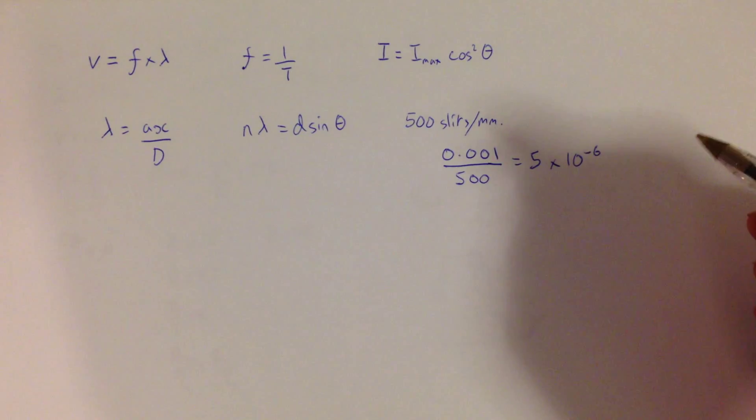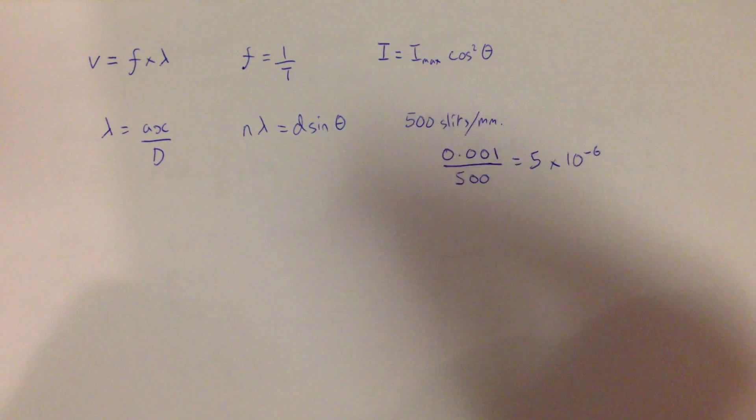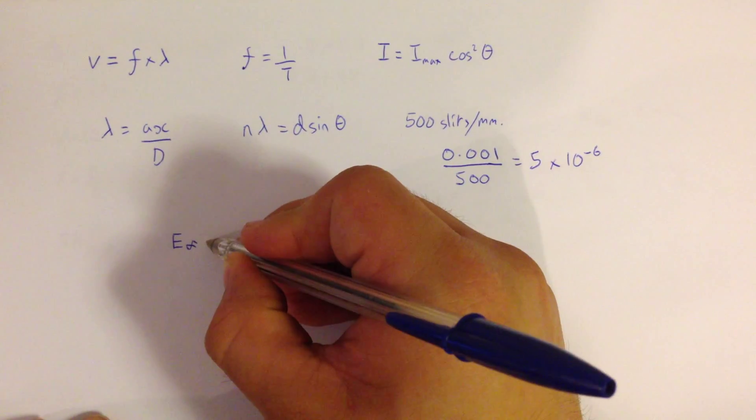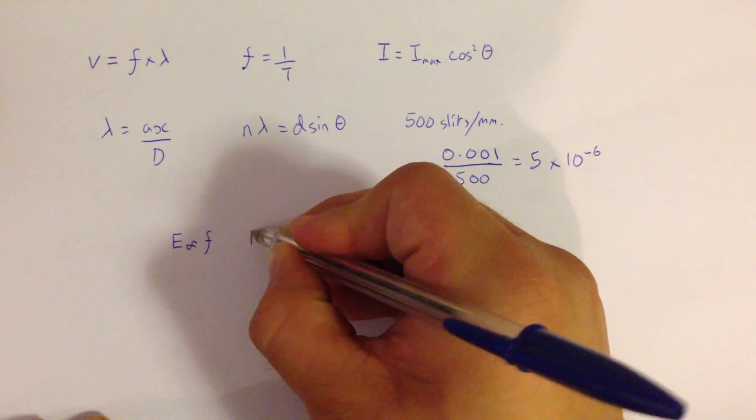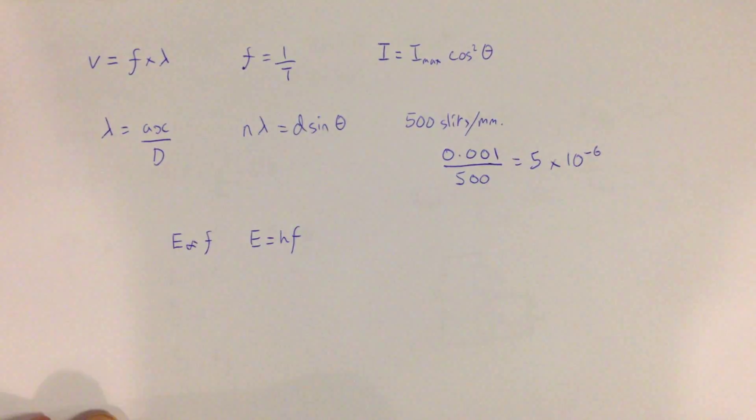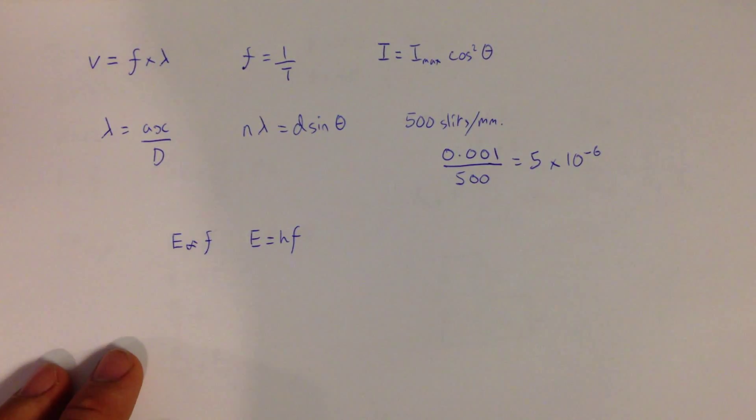The next equation that we have in waves comes from quantum. So in quantum physics, we have that energy is directly proportional to frequency, which leads us to the Planck equation, where H is Planck's constant, E is the energy, and F is the frequency.